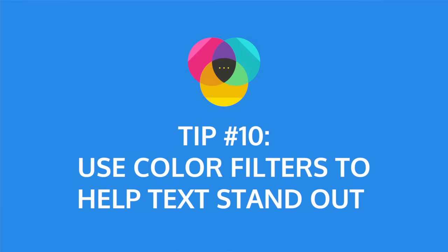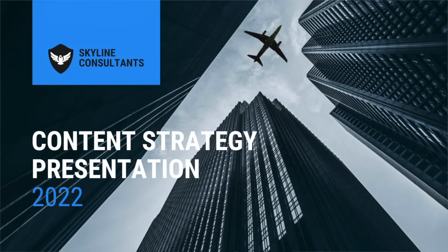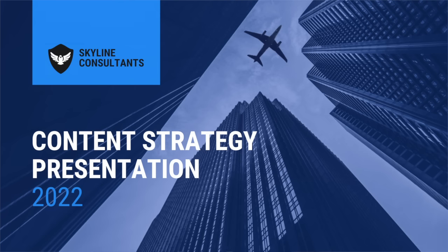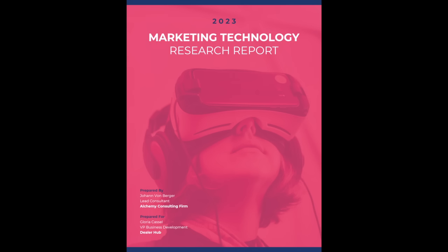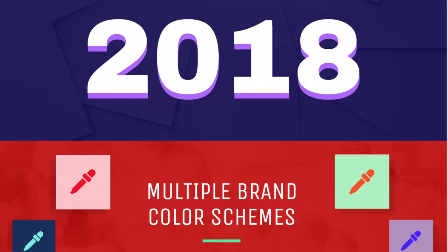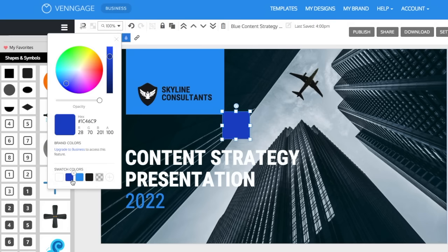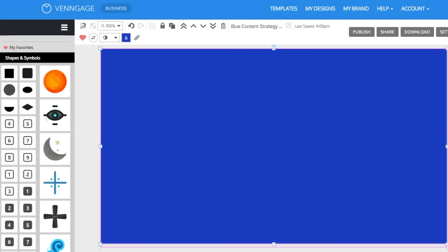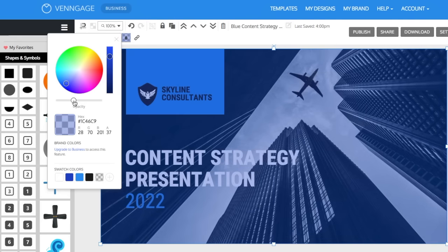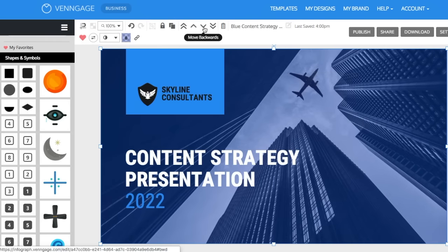And finally, tip number ten: use color filters to help text stand out from your background images. A busy background image can make text hard to read and create a cluttered, confusing slide design. A simple trick is to use a color filter on your background image to mute the image and help the text pop. This applies not only to presentation design, but also report design, poster design, infographic design, and virtually anything. On Venngage, you can do this by dragging a square icon onto your slide, fitting it to the dimensions of the background image, and adjusting the opacity so the image shows through.